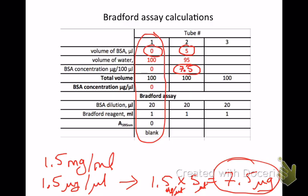Now the total volume is 100 microliters, so I actually have 0.075 micrograms per microliter. Now of course you need to do other samples using different concentrations, and we'll show some examples of that also.